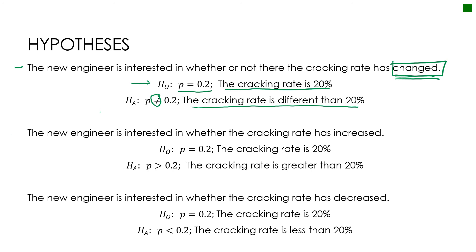If the question instead said the new engineer is interested in whether the cracking rate has increased, then I'm still using my null hypothesis that nothing has changed, but my alternative is that p has increased or is more than 20%. And I'm just then writing it in words.